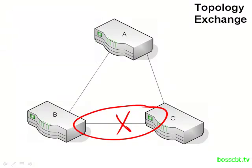EIGRP uses the topology table to create routes, just like OSPF would, but the actual details of that process are different. The details of creating routes will be covered in a dedicated tutorial.